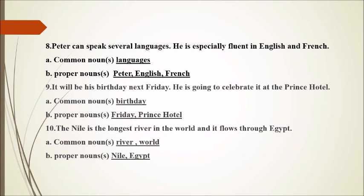Number 10: 'The Nile is the longest river in the world and it flows through Egypt.' Common nouns: river, world. Proper nouns: Nile, Egypt.